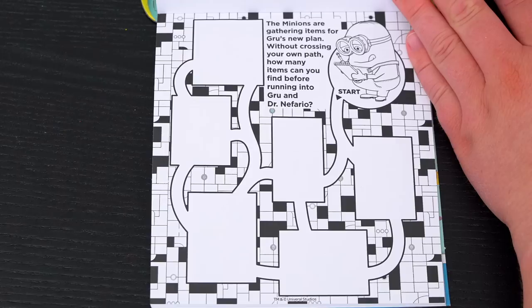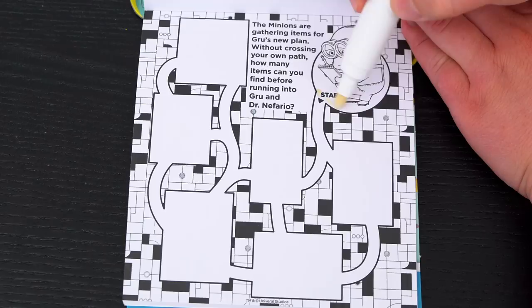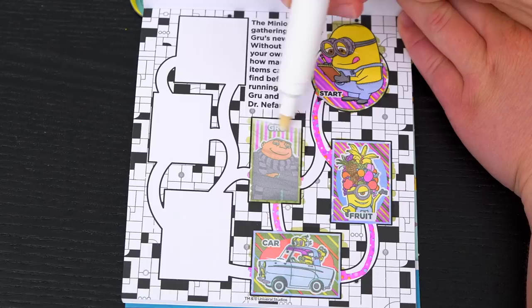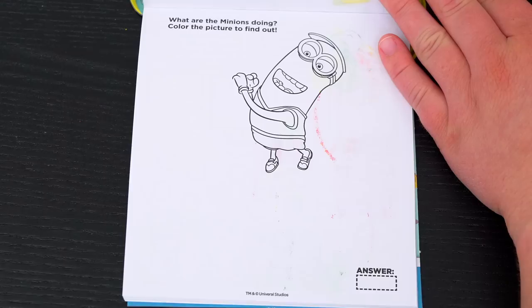The Minions are gathering items for Gru's new plan! Without crossing your own path, how many items can you find before running into Gru and Dr. Nefario? Okay, so let's start here! Alright, we got some fruit! And a car! Oh no, we ran into Gru! Well, at least we found a car and some fruit!